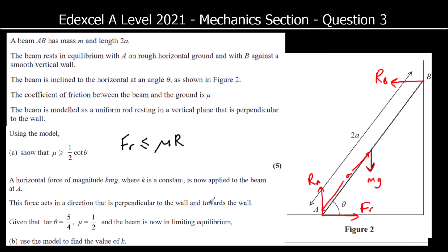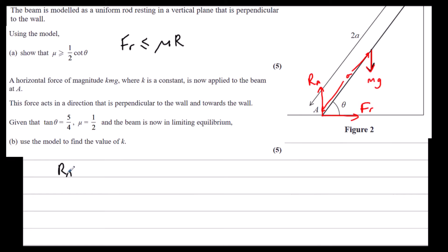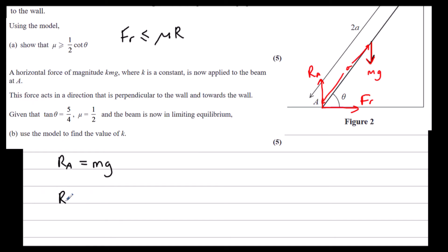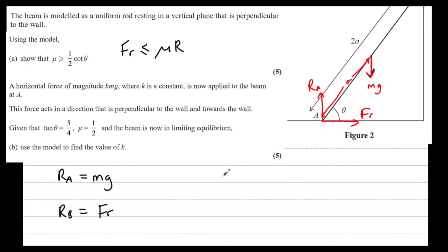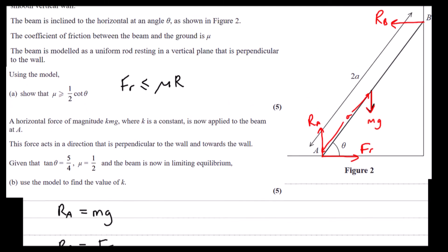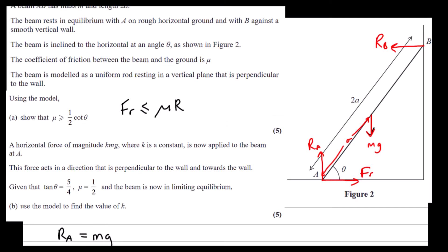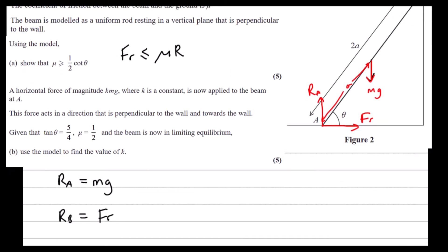We can use forces up equal forces down, forces left equal forces right, and we can take moments. There's only one force going up and one going down, so the reaction at A equals mg. Forces to the left — the reaction at B — equals forces to the right, which is friction. So reaction at A equals mg, and reaction at B equals friction.